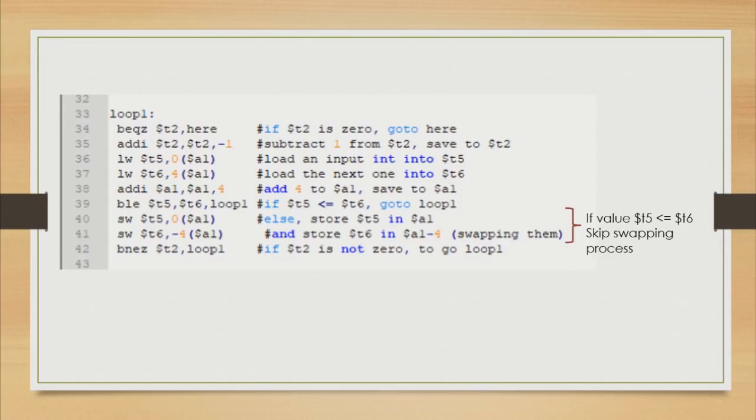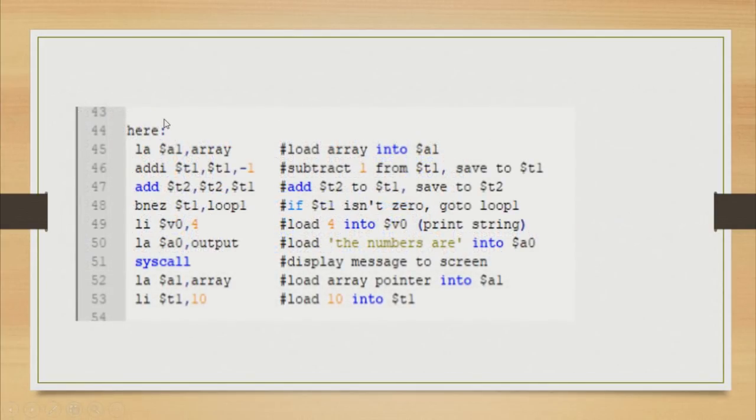In function here, we load the array into register A1 and need to minus 1 from the value in register T1, and we need to store that particular value in the same register which is register T1. Please be noticed that this is a statement for loop update. Next, we load system call sign 4 which is to print a string name output to the console in line 52.